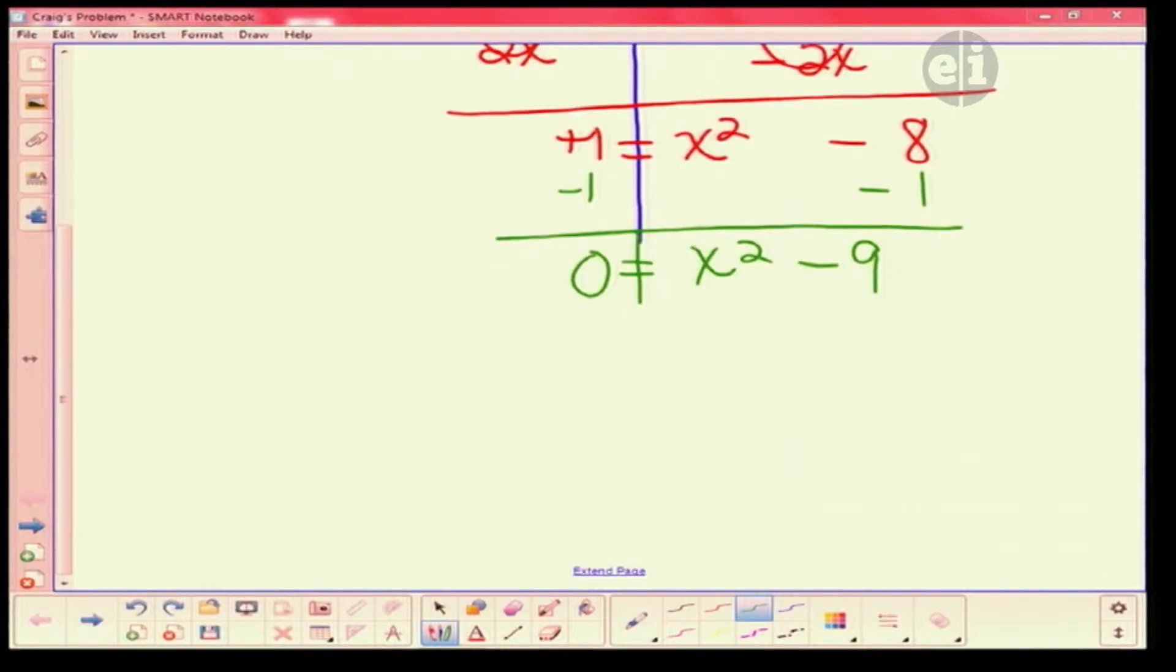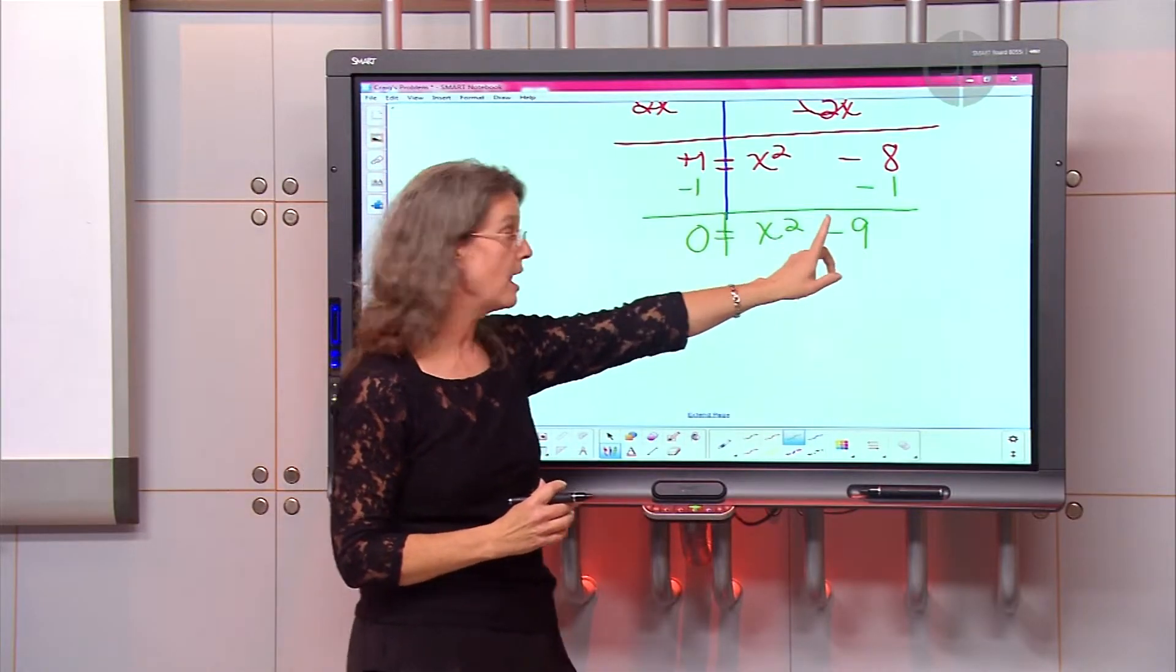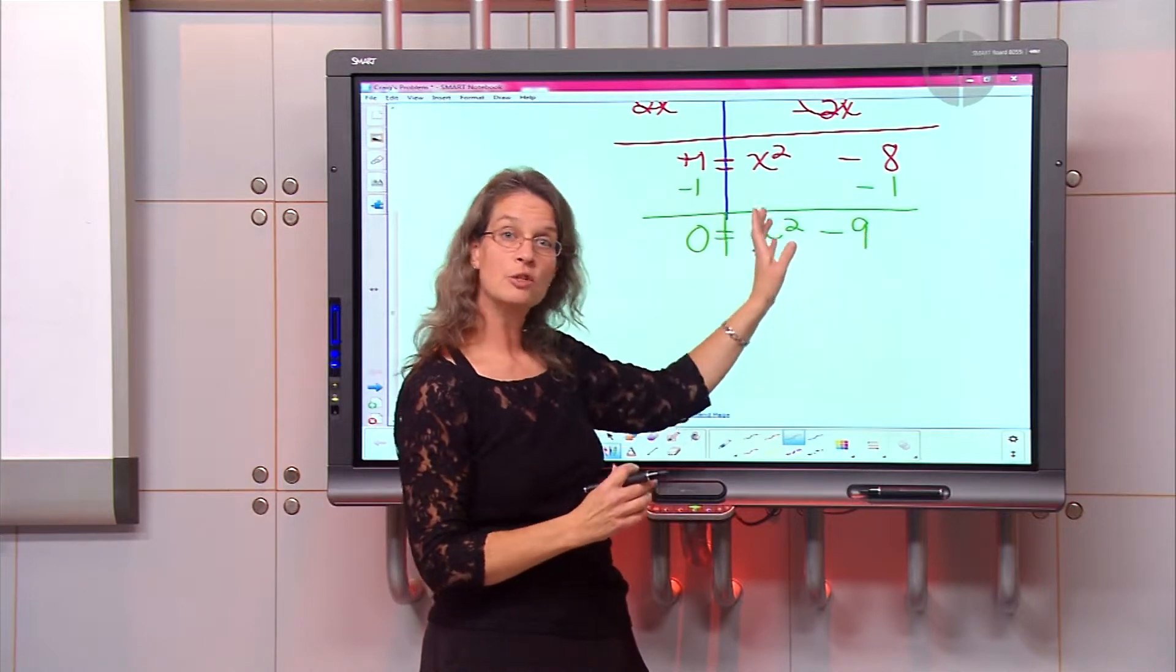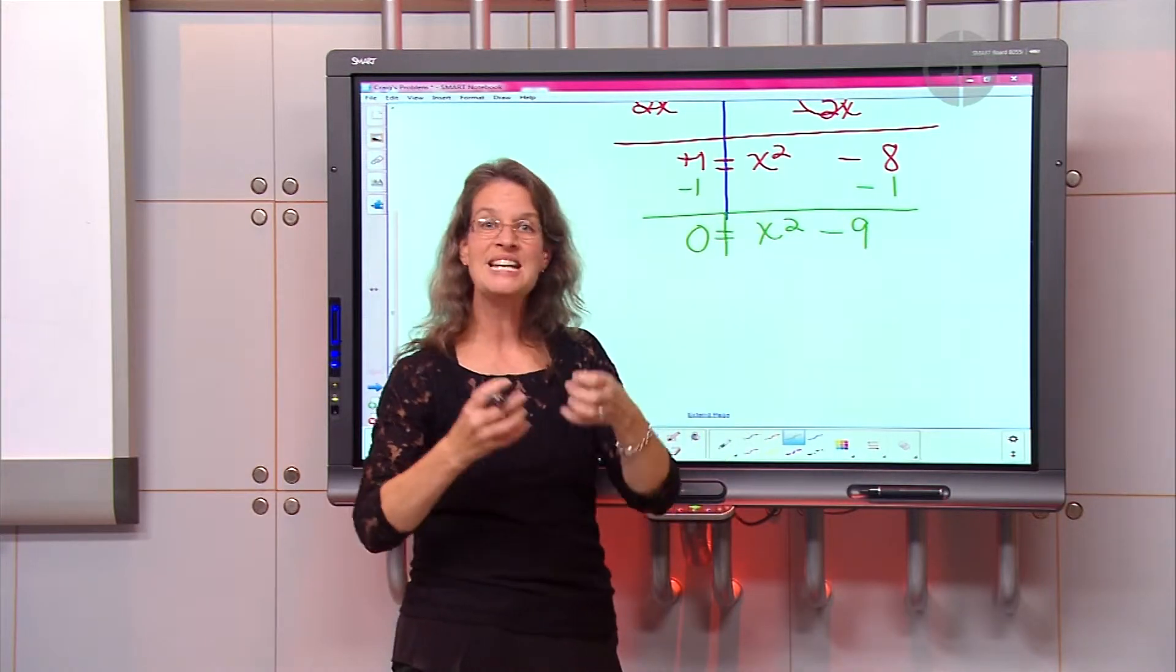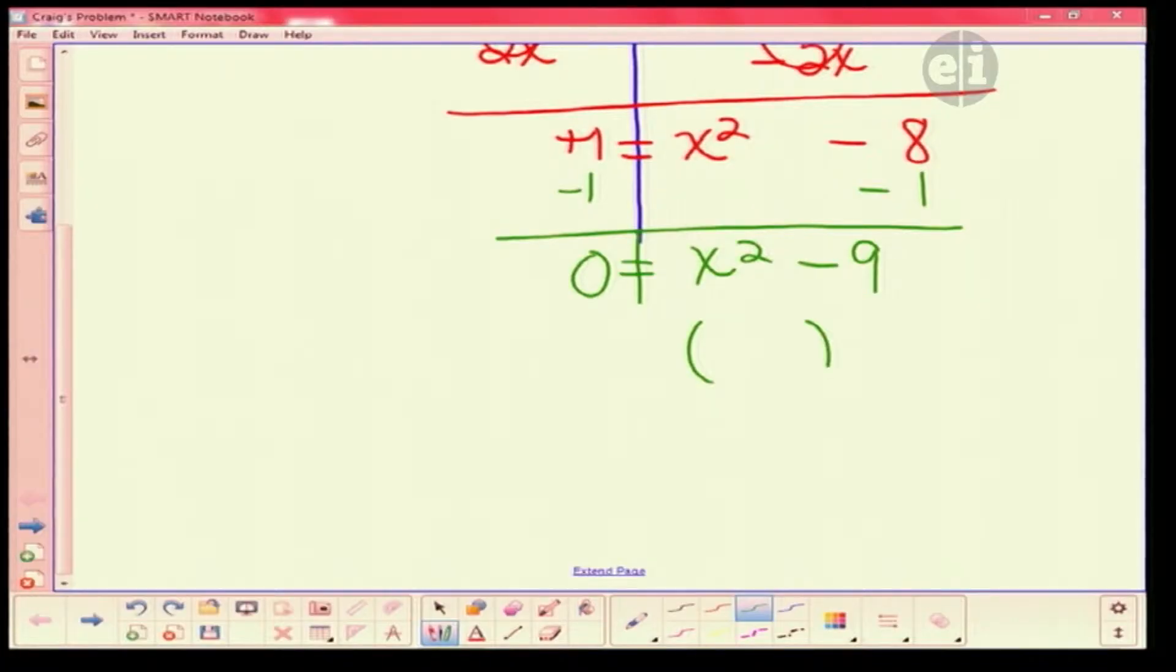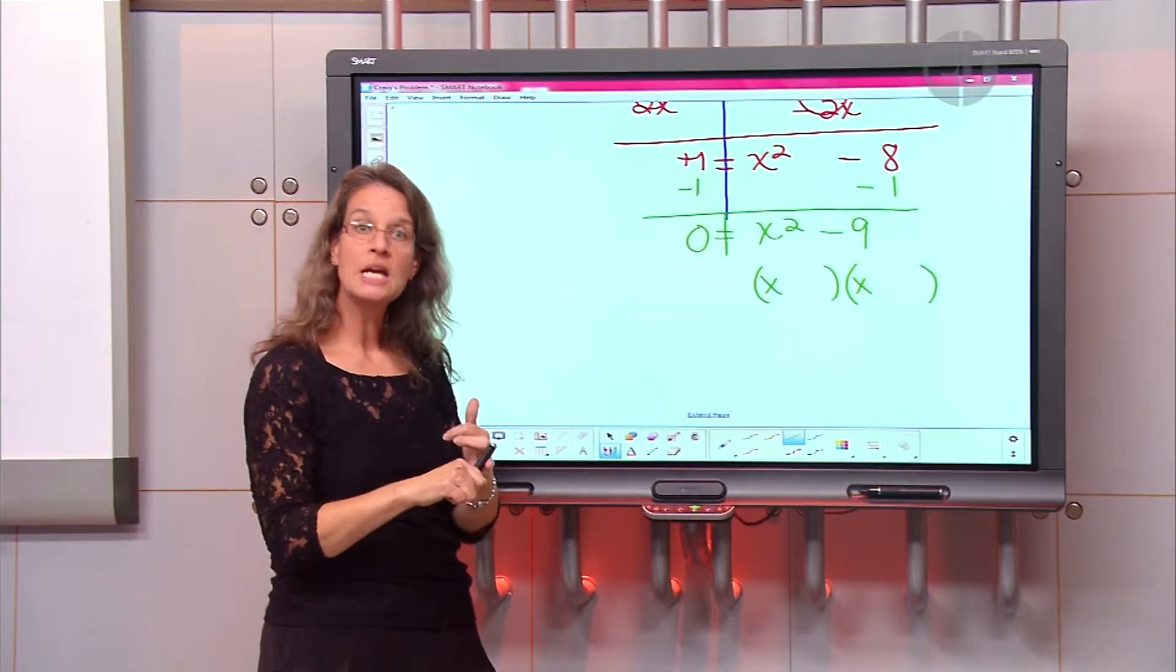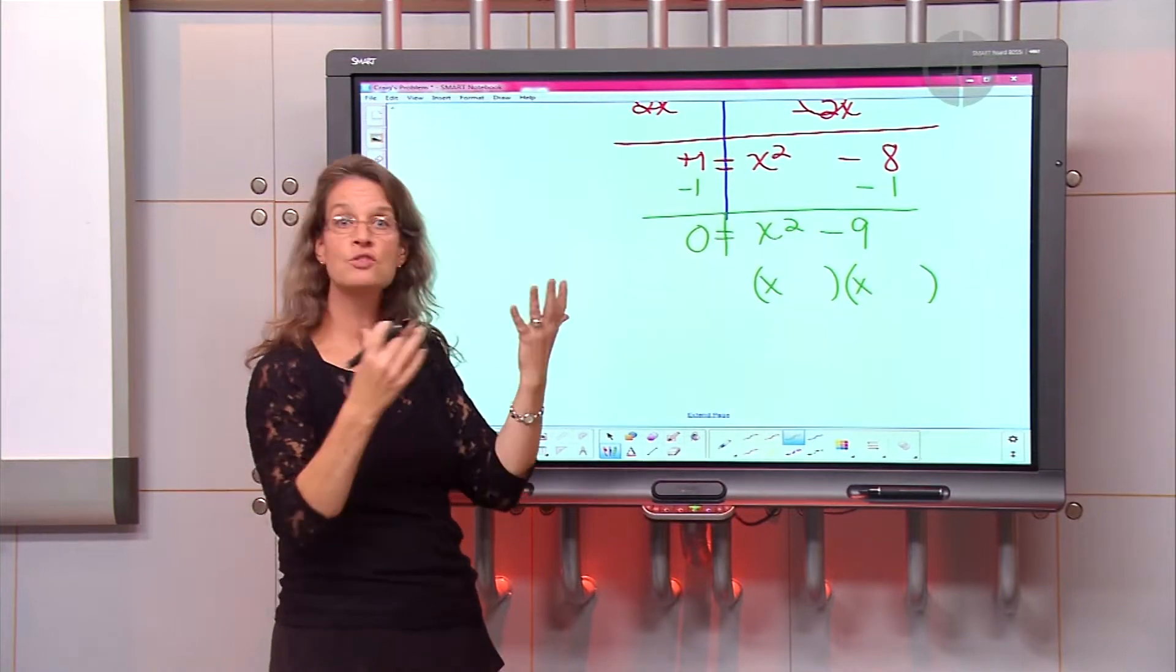Now, your teacher may have said something to you about the difference of two squares. This is a perfect square, as is this. So since they're perfect squares, you have something times itself that will give you those. So that means I can factor this into two binomials. I know that x times x is x squared, so I'm going to put those in there. I also know that 3 times 3 is 9. Same number, so I can use that.